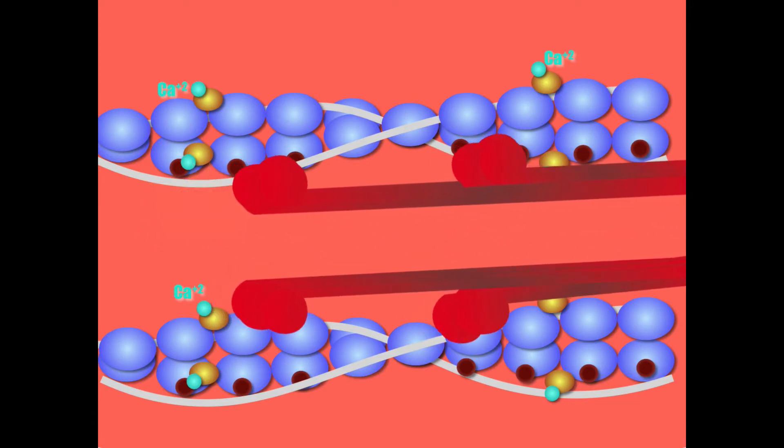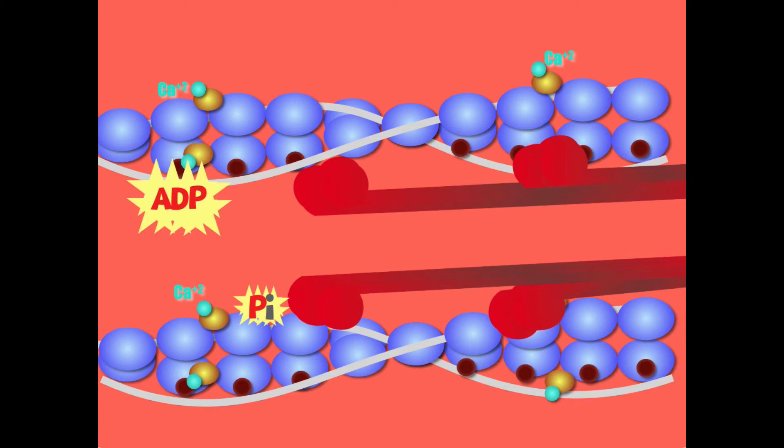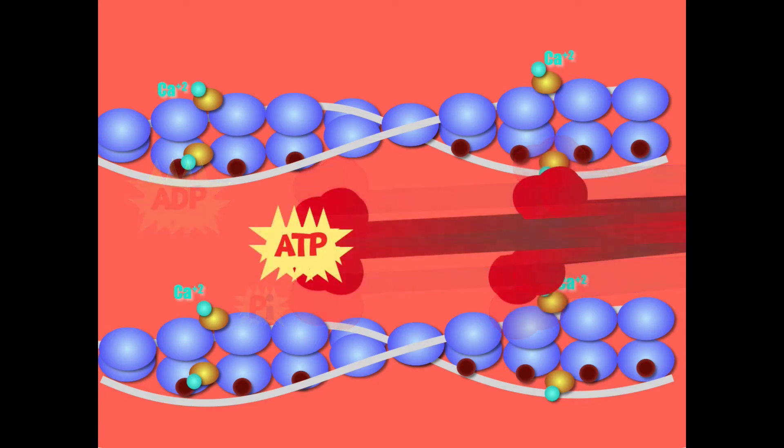Then you have the cross bridge formation, the power stroke splitting up ADP and phosphate, recovery stroke with ATP. One thing to keep in mind here: you may have heard of rigor mortis.